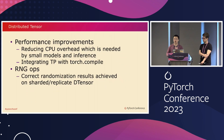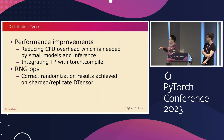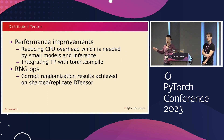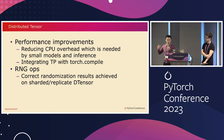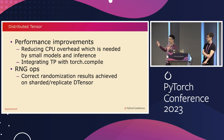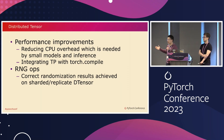We did some performance improvements on the DTensor side. We observed there is some CPU overhead, which is critical for small models where the CPU overhead cannot be well-hidden, so we did a bunch of optimizations. We have also enabled integration with TorchCompile — please try it out and let us know how it goes. This will definitely help reduce the CPU overhead.